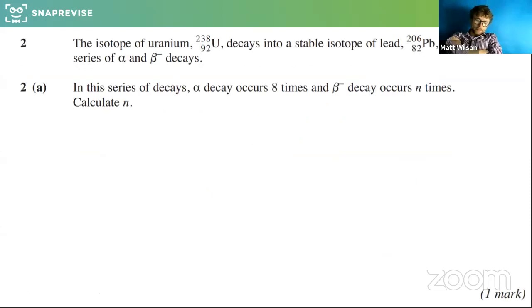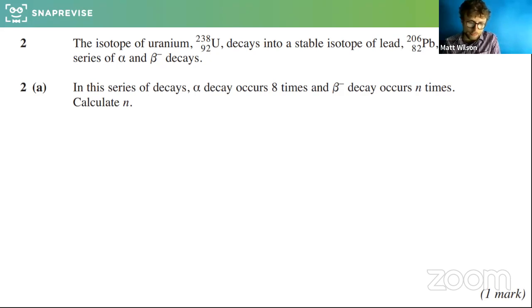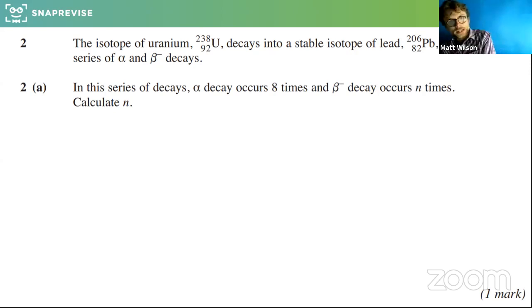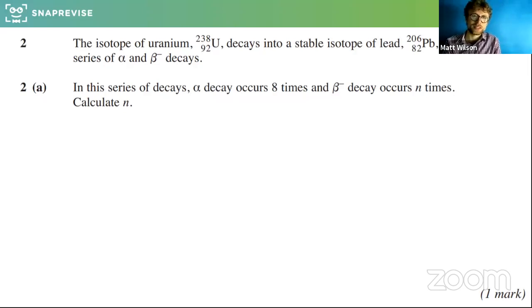Next question. The isotope of uranium U-238 (92) decays into a stable isotope of lead Pb-206 (82) by means of a series of alpha and beta decays. In this series, alpha decay occurs eight times and beta decay occurs n times — calculate n. Let's take a look at this question.